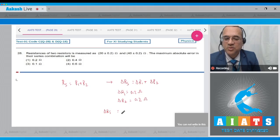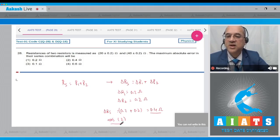So delta rs will be equal to 0.2 plus 0.2, and you get 0.4 ohm as the absolute error in combination. So in series combination, answer to this question is option number 2. Let us move to the next problem.